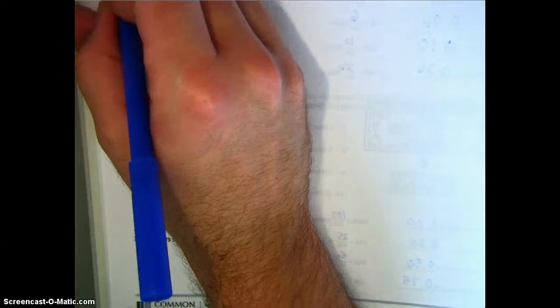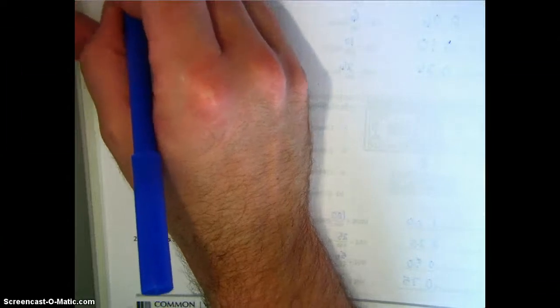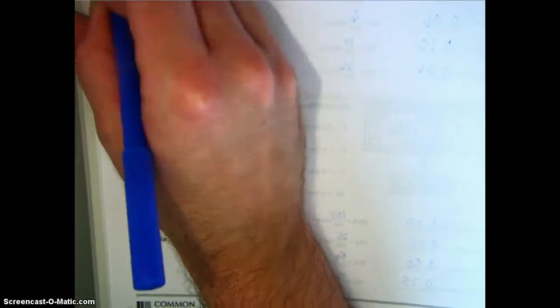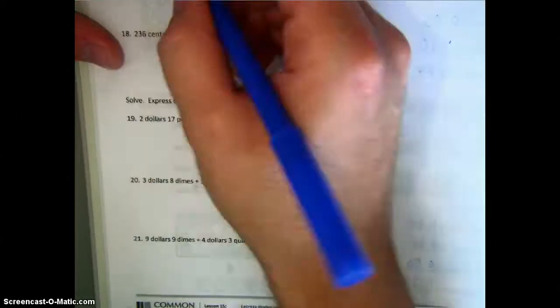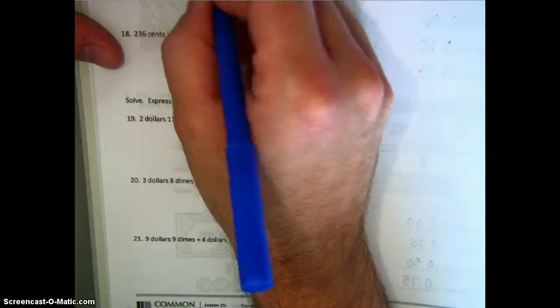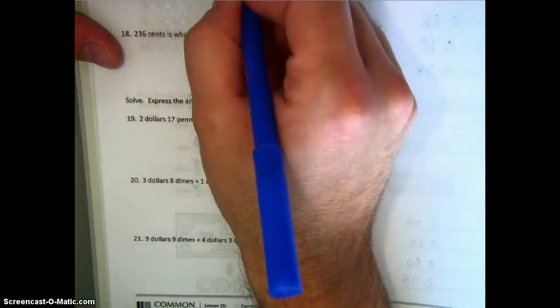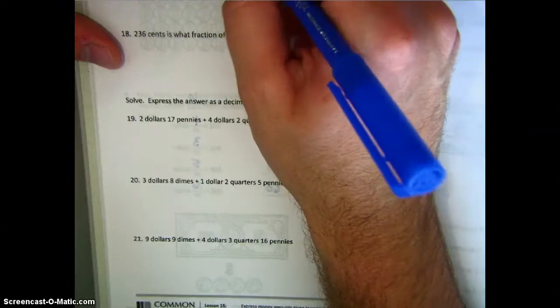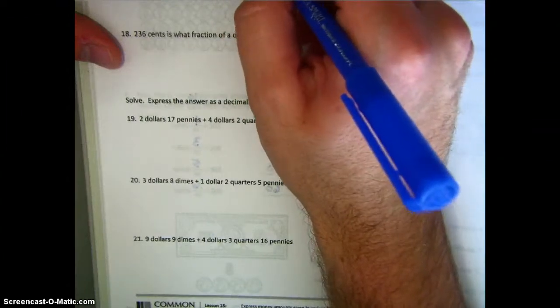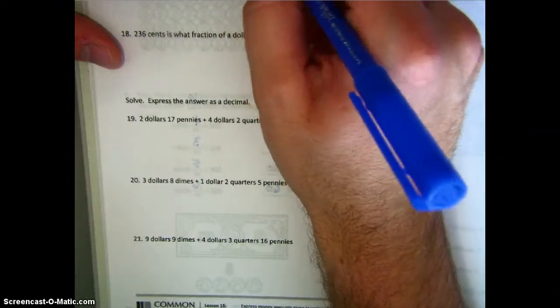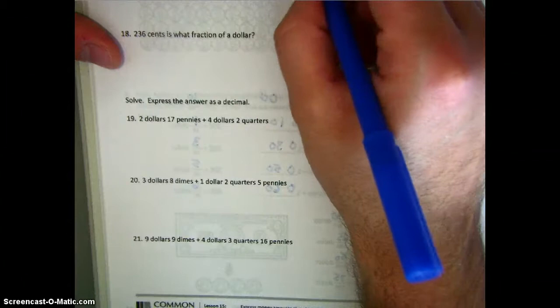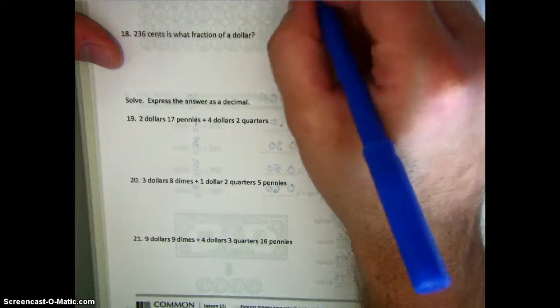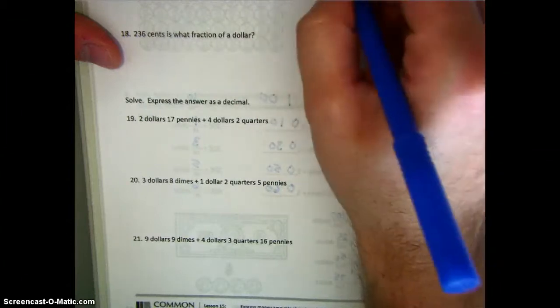Moving on to the next one, we have eight dimes, or eighty cents, plus twenty-three pennies, or twenty-three cents. Adding that up, we get one dollar and three cents, or one hundred and three hundredths of a dollar.